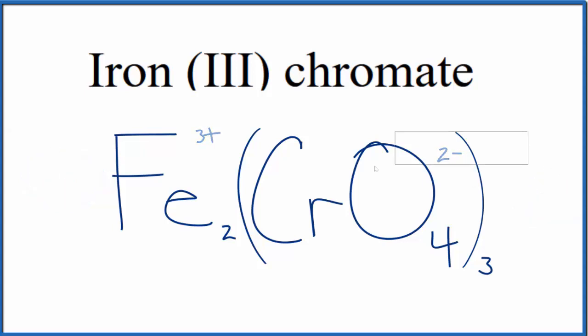And this is the formula for iron III chromate: Fe2(CrO4)3.